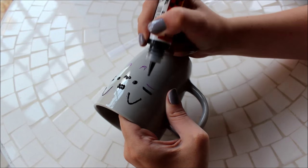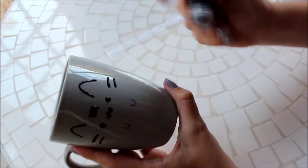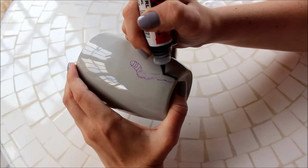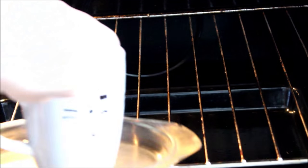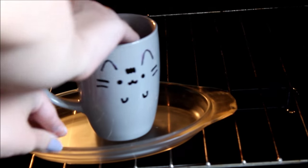Trace over the fineliner with your ceramic liner and follow the instructions for setting it. Mine had to be baked in the oven for 40 minutes. Once your liner has been set, let your mug cool and your mug is complete.